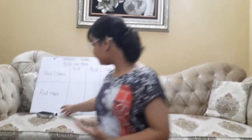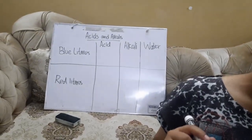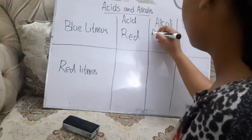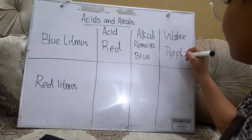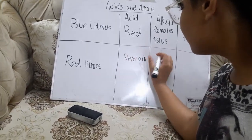We're going to be writing the results on this board. As you can see here, we have all our results. Blue litmus in acid turns red. In alkali, it remains blue. In water, it turned a light purple. For the red litmus paper — in acid, it remains red. In alkali, it turned blue.